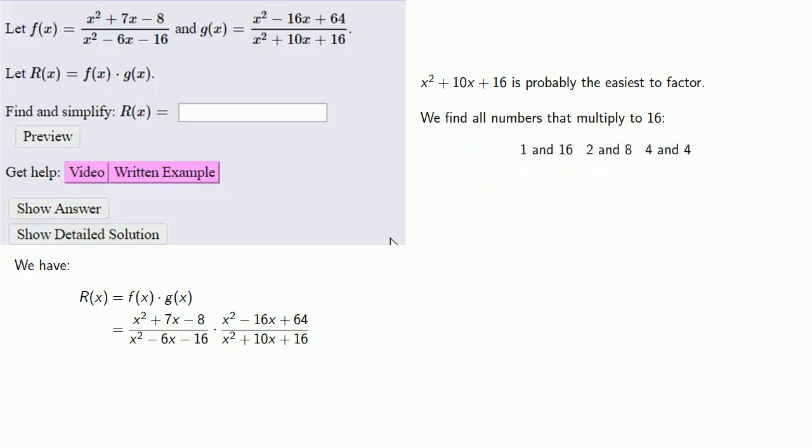Remember, the only way to see if a factorization works is to check to see if it works. So we'll start off with this first pair, 1 and 16. Maybe we're really lucky and x squared plus 10x plus 16 is x plus 1 times x plus 16. But I wouldn't count on it, so let's go ahead and multiply it out and see if this factorization is correct. And it isn't.